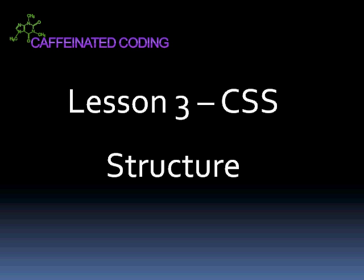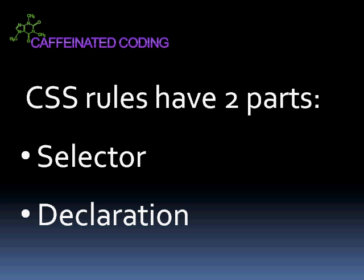Hello, and welcome to Lesson 3 of Cascading Style Sheets, CSS Structure. A CSS element, or rule, has two main parts: the selector and the declaration.